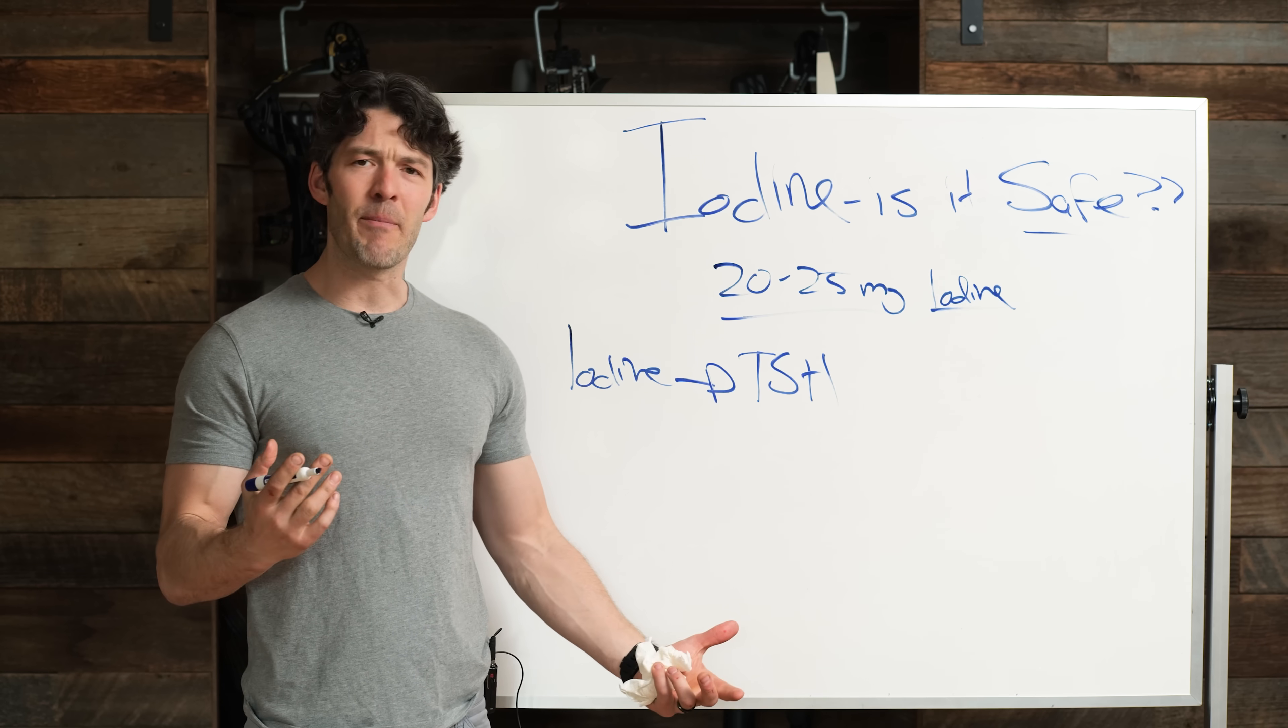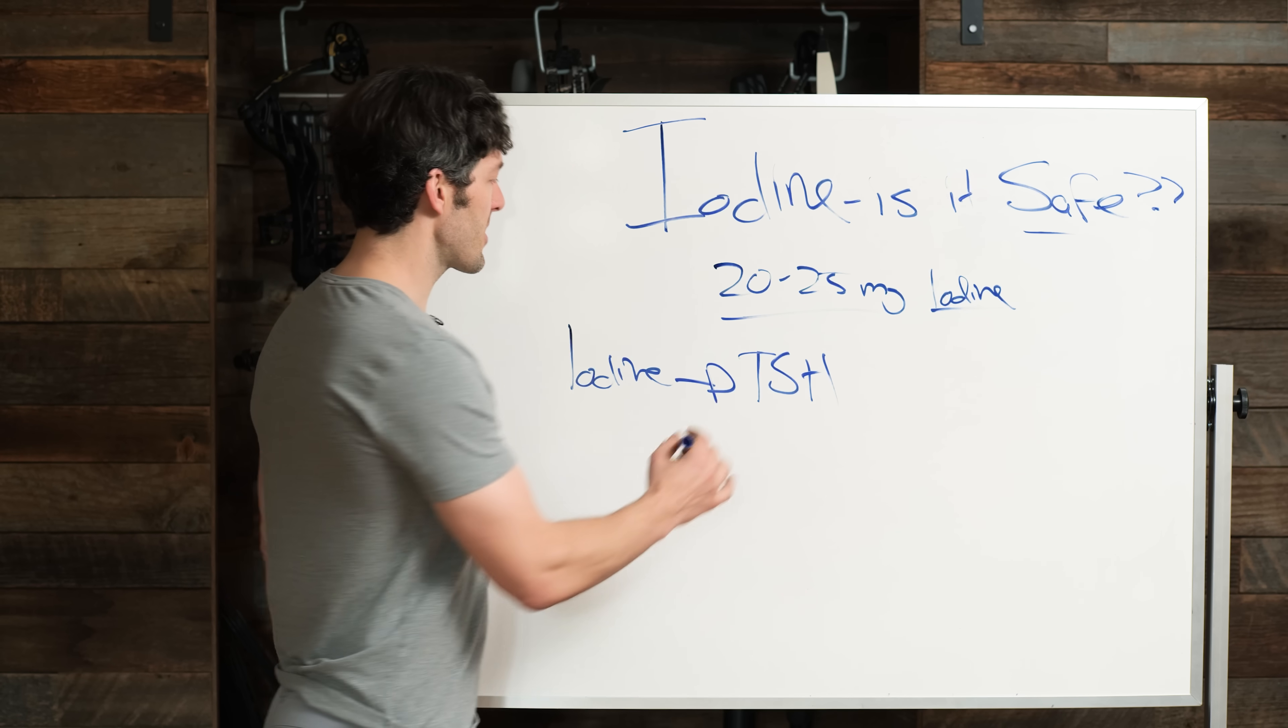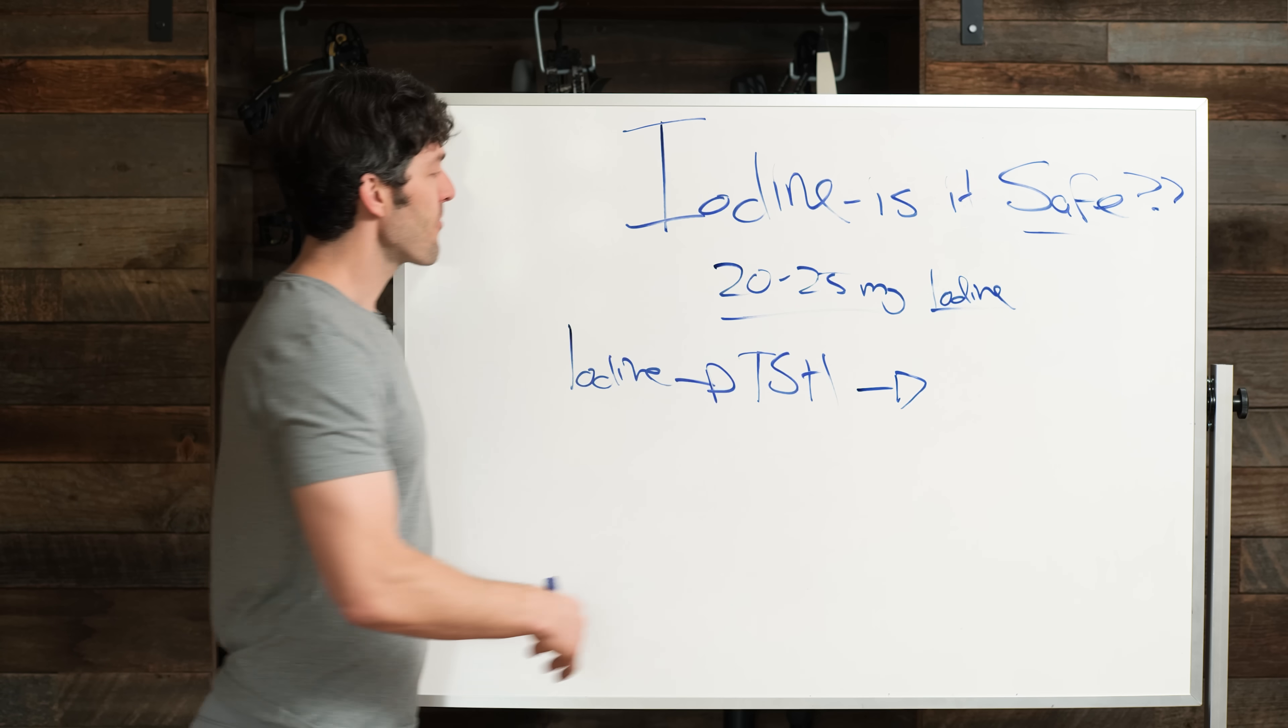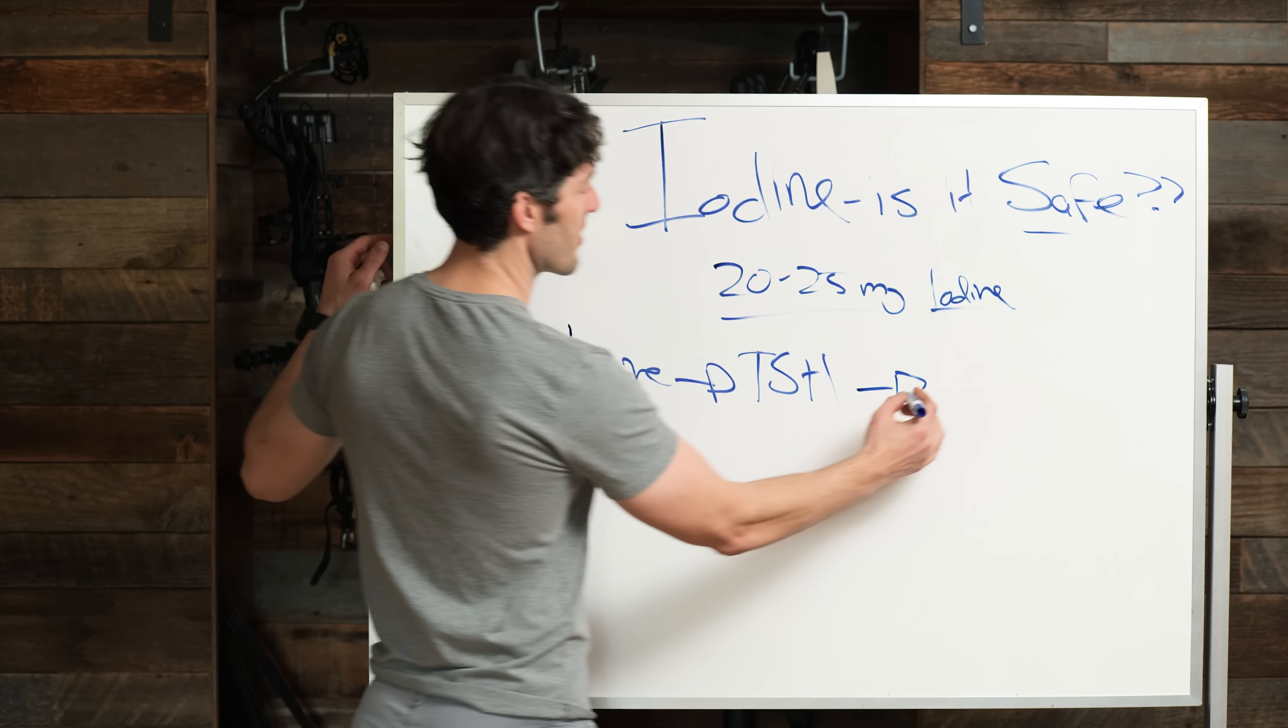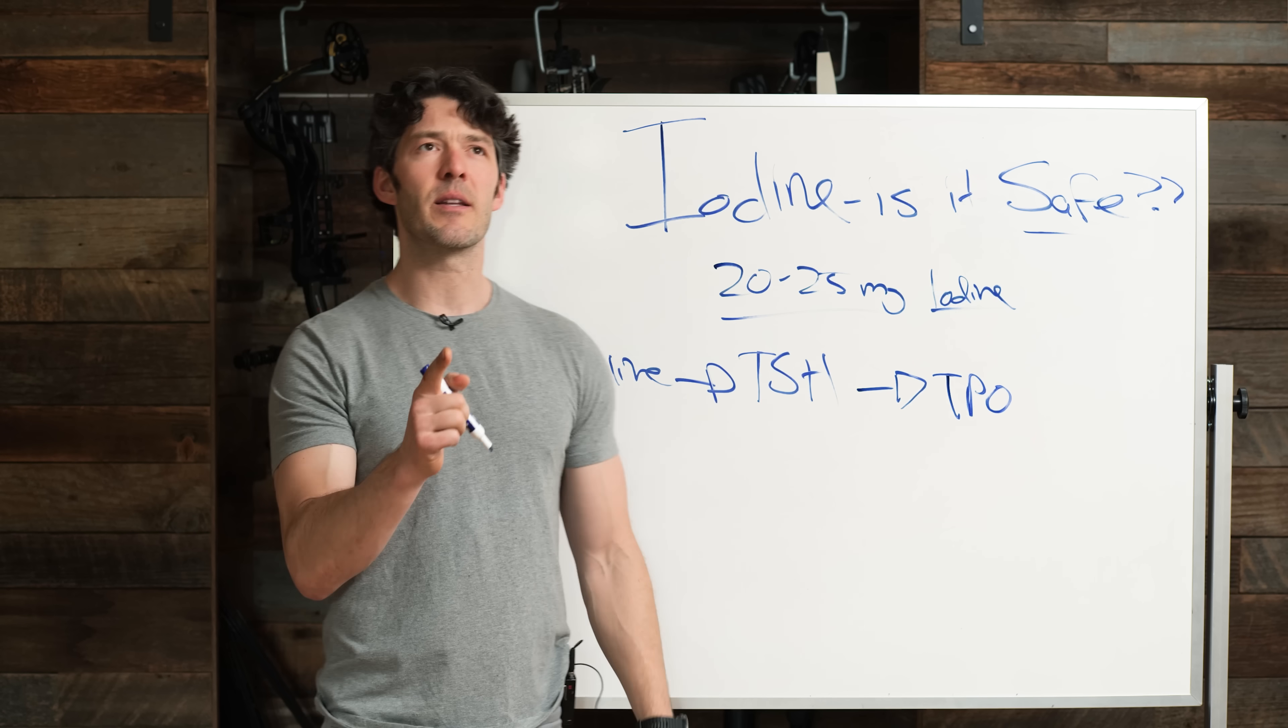You may be like, wait Mike, no no no, iodine is not related to TSH. It actually is. This is a pituitary hormone that then tells the hypothalamus and so forth that will then increase production, an increase in enzyme called TPO. So this is called thyroperoxidase, peroxidase.